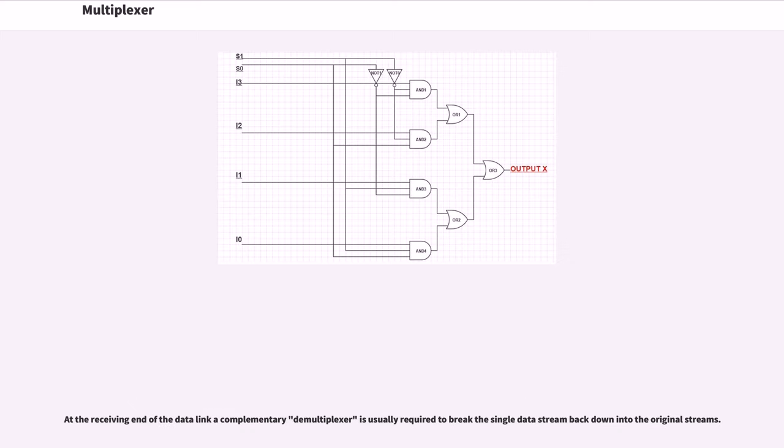At the receiving end of the data link, a complementary demultiplexer is usually required to break the single data stream back down into the original streams.